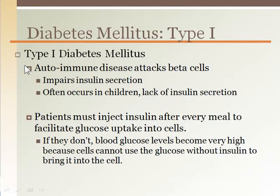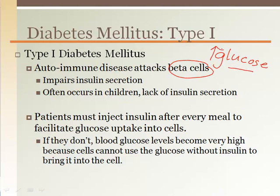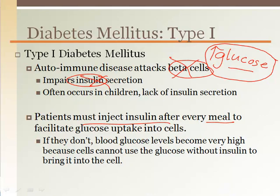In type 1 diabetes, it is an autoimmune disease, meaning the body attacks itself — specifically the beta cells which release insulin. Therefore, the ability to release insulin is impaired. This is problematic because when we eat carbohydrates and end up with high glucose levels, we need insulin to shuttle it into the cells. Without functional beta cells, we don't have enough insulin and end up with chronically high blood glucose levels. That's why patients must inject insulin after every meal.